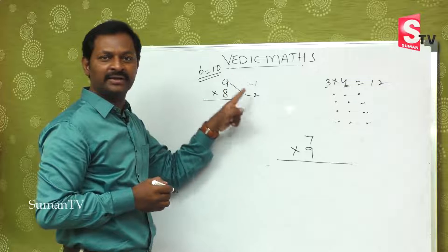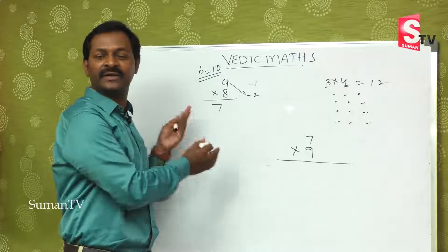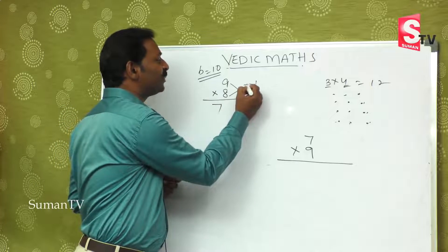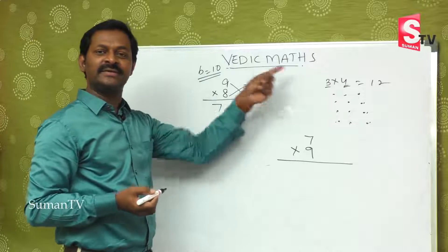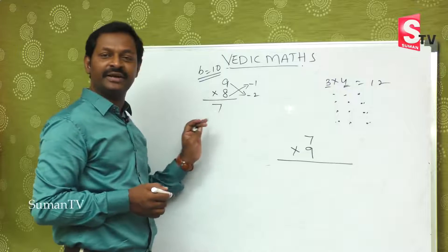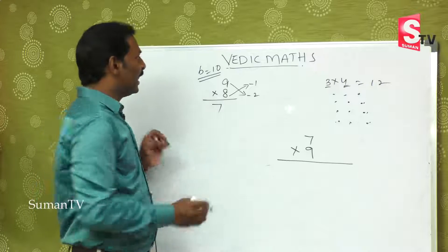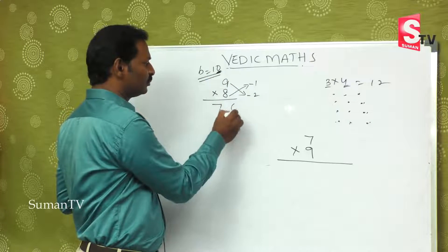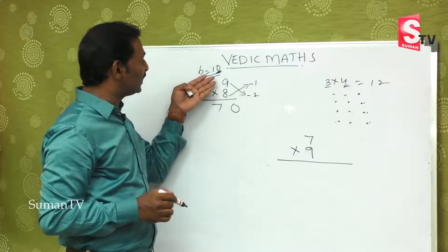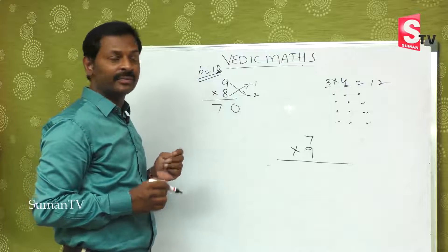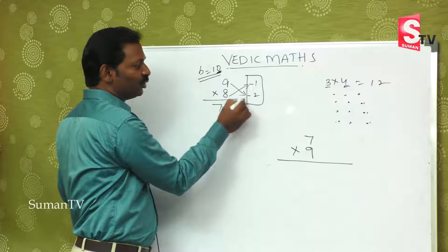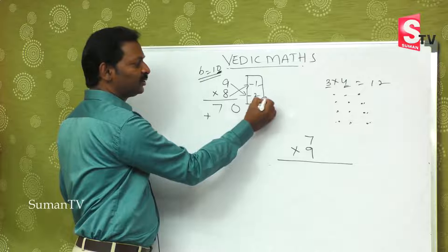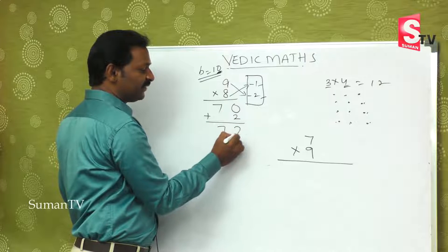It is minus 2. That is 7 — the first part of the answer is over. If you doubt it, it is minus 1. So 8 minus 1 is 7 — the right answer is 7. The base number is 10. How is the base number? It is 1 — it is finished. So 9 × 8 is 70. This extra is minus into minus, which is plus. 1 × 2 is 2. The answer is 72.